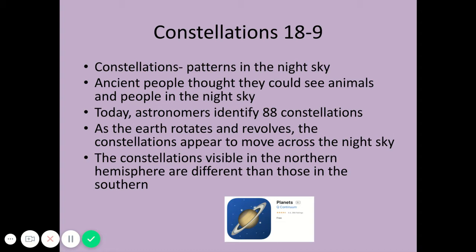Some stars don't rise or set but instead make a circular arc — these are constellations higher up in the sky, farther toward the north. They rotate but don't actually rise and set. As the Earth revolves around the sun over the course of the year, we see some constellations only certain parts of the year and not others.